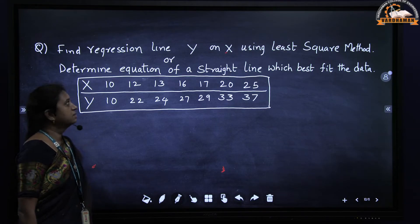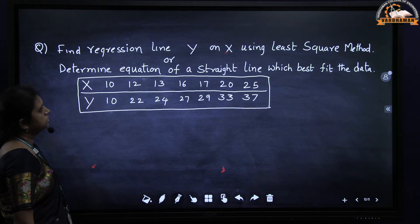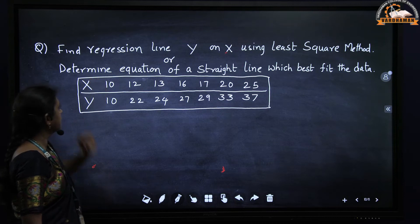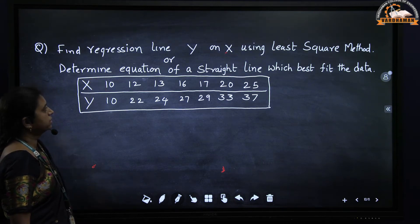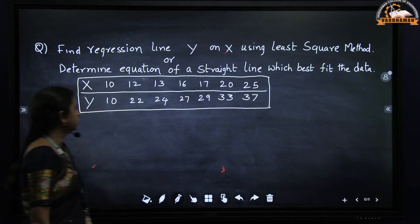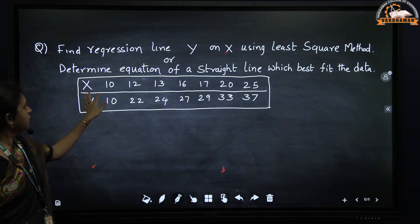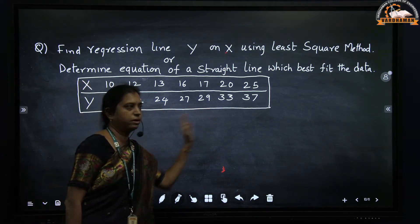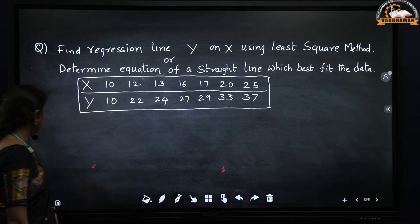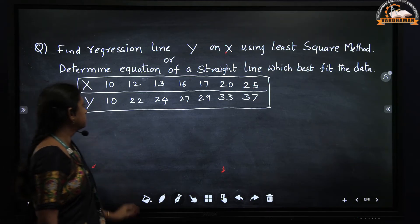Now we will see an example: find the regression line y on x using the least square method. The same question can also be asked as: determine the equation of a straight line which best fits the data. Here x and y values are given and the number of observations is 7. Using this data we will find out the values of a and b to fit the straight line.